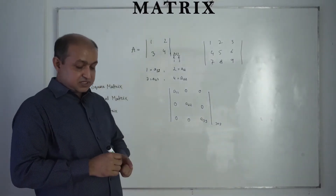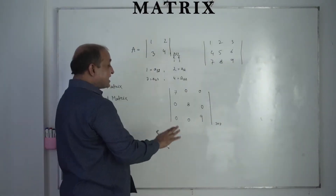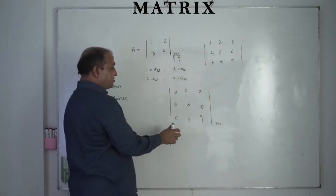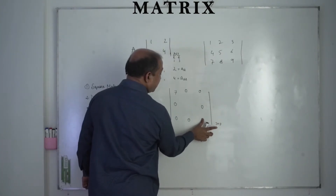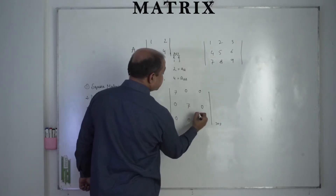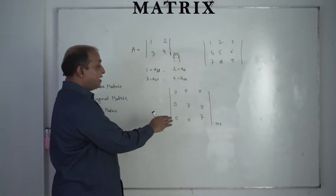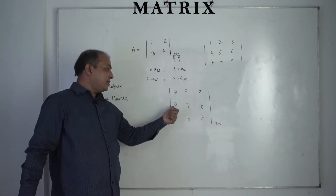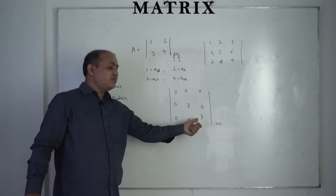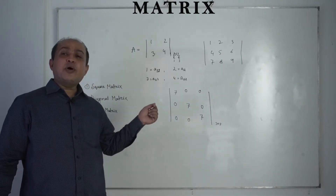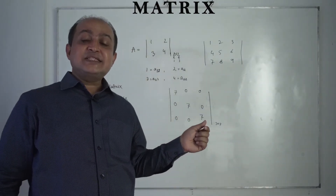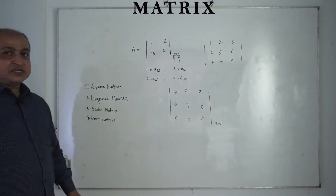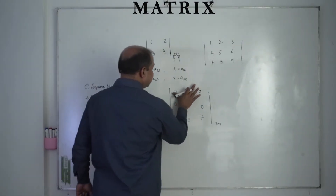The third type is the scalar matrix. In a diagonal matrix, all elements except the diagonal are zero. But in a scalar matrix, all the elements of the diagonal are the same. For example, in a 3×3 matrix, row 1 has 7, row 2 has 7, and row 3 has 7 on the diagonal — all diagonal elements are equal. That is called the scalar matrix.